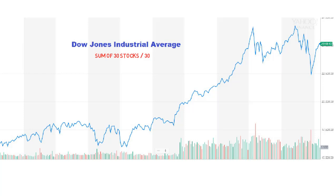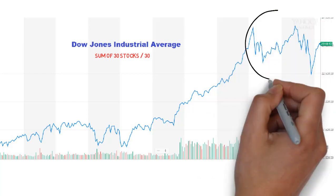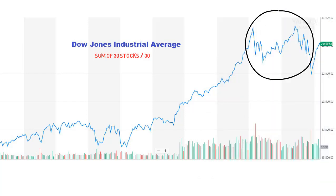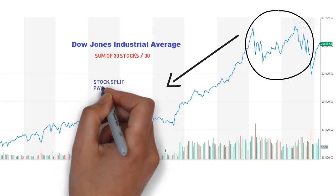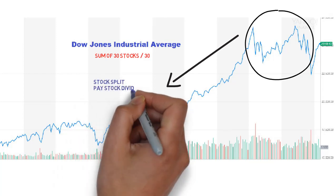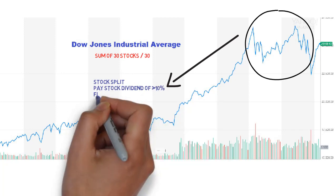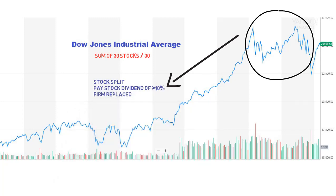You might wonder why the DJIA is showing approximately 25,000 if it is supposed to be the average price of the 30 stocks in the index. The answer is simple. The DJIA no longer equals the average price of the 30 stocks because the averaging procedure is adjusted whenever stock splits or pays a stock dividend of more than 10%, or when one company in the group of 30 industrial firms is replaced by another.